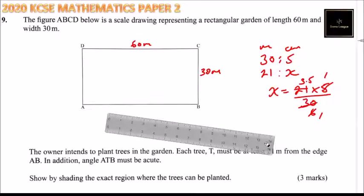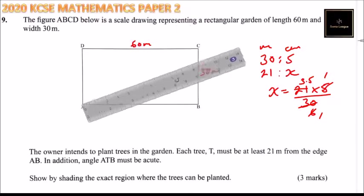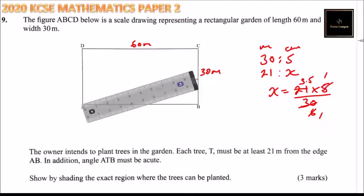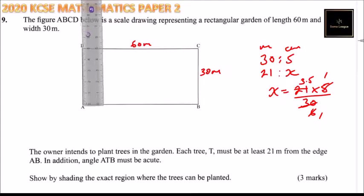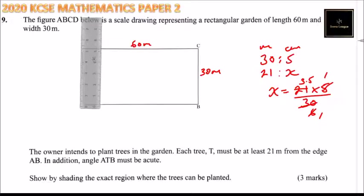From A, we measure 3.5. So you take your ruler or your divider and measure 3.5. You can use a divider or a ruler or you can use the ruler direct. You will be able to get that. So it means that is where we have our ruler.